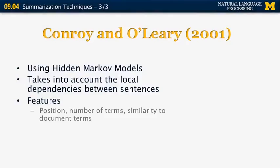Very often, if you include a sentence, you have to decide whether the sentence before or after should also be included. So the features that are used are things like position, number of terms, similarity to the document terms, which is very similar to the centroid idea in the Mead paper.